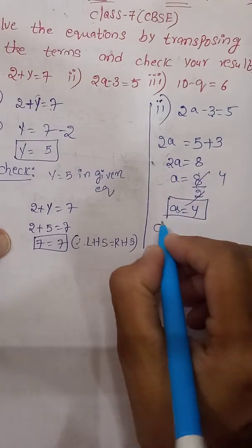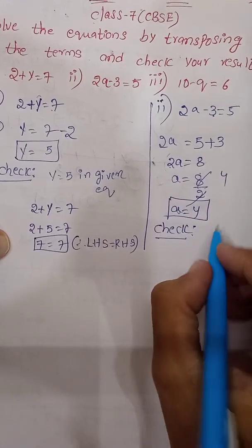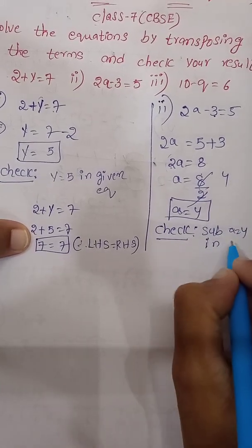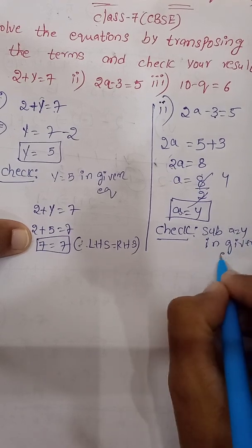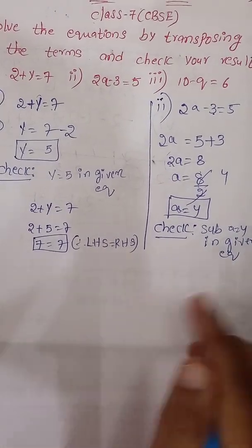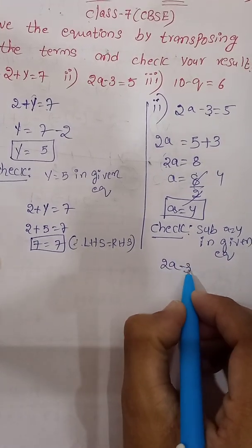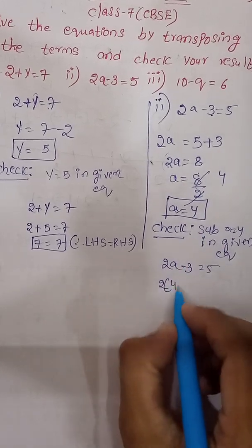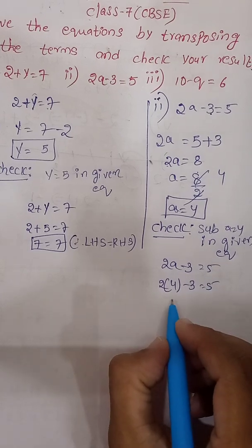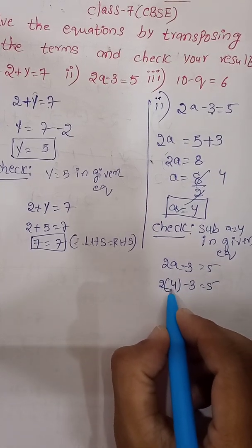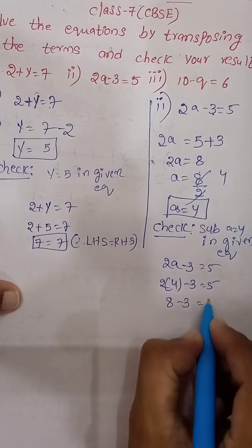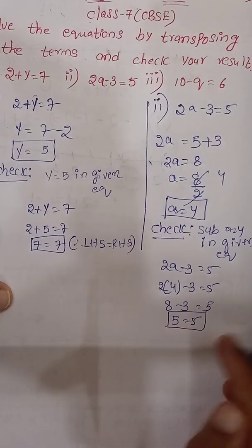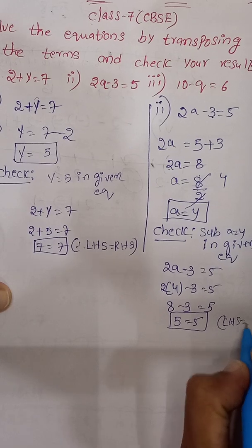Check: substitute A equal to 4 in the given equation 2A minus 3 equal to 5. We get 2 into 4 minus 3 equal to 5, which is 8 minus 3 equal to 5. LHS equals RHS, so our answer is correct.